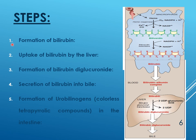These three processes can be sequenced into five steps: Step 1 — formation of bilirubin; Step 2 — uptake by the liver; Step 3 — formation of bilirubin diglucuronide, which is the conjugated form; Step 4 — secretion of bilirubin into bile; Step 5 — formation of urobilinogen from bilirubin in the intestine.